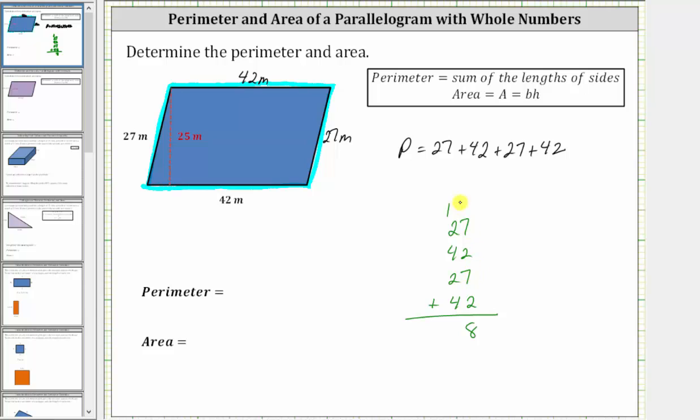In the tens place value, we have one plus two, which is three. Three plus four is seven. Seven plus two is nine. And nine plus four is 13. The perimeter is equal to 138 meters.